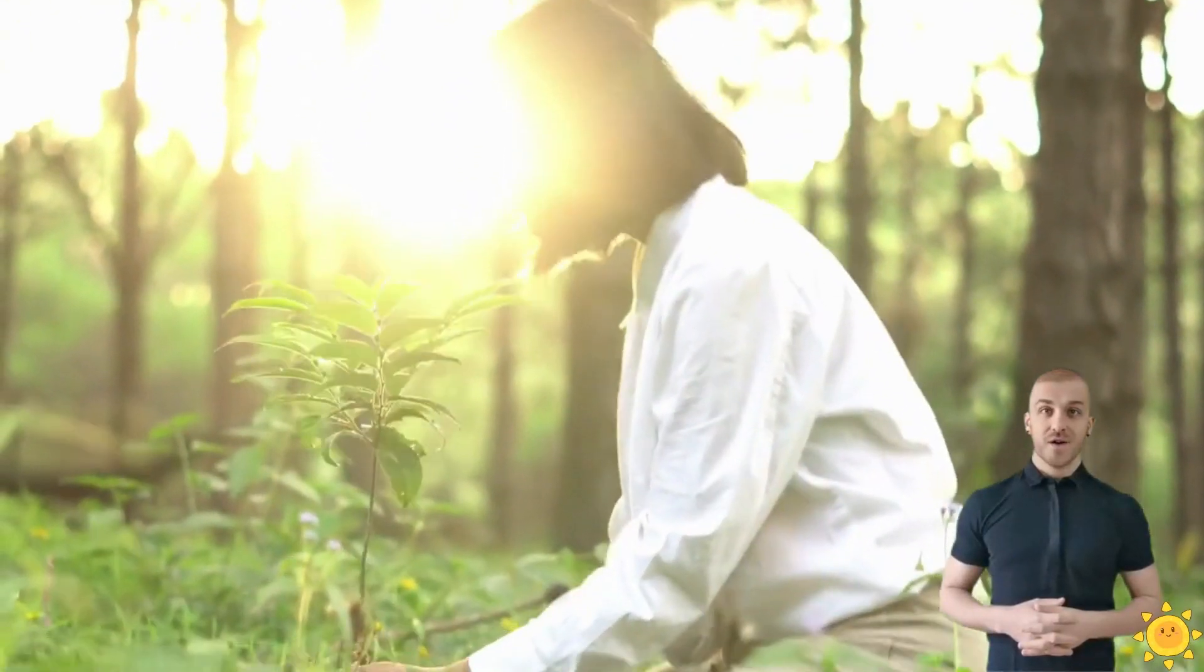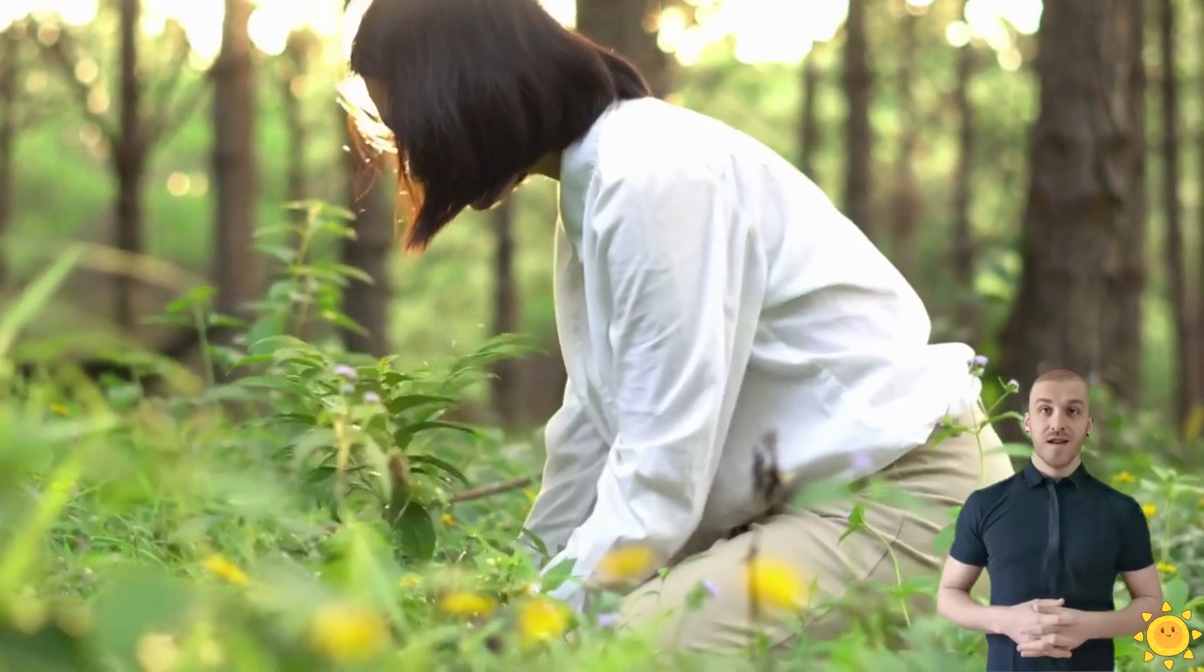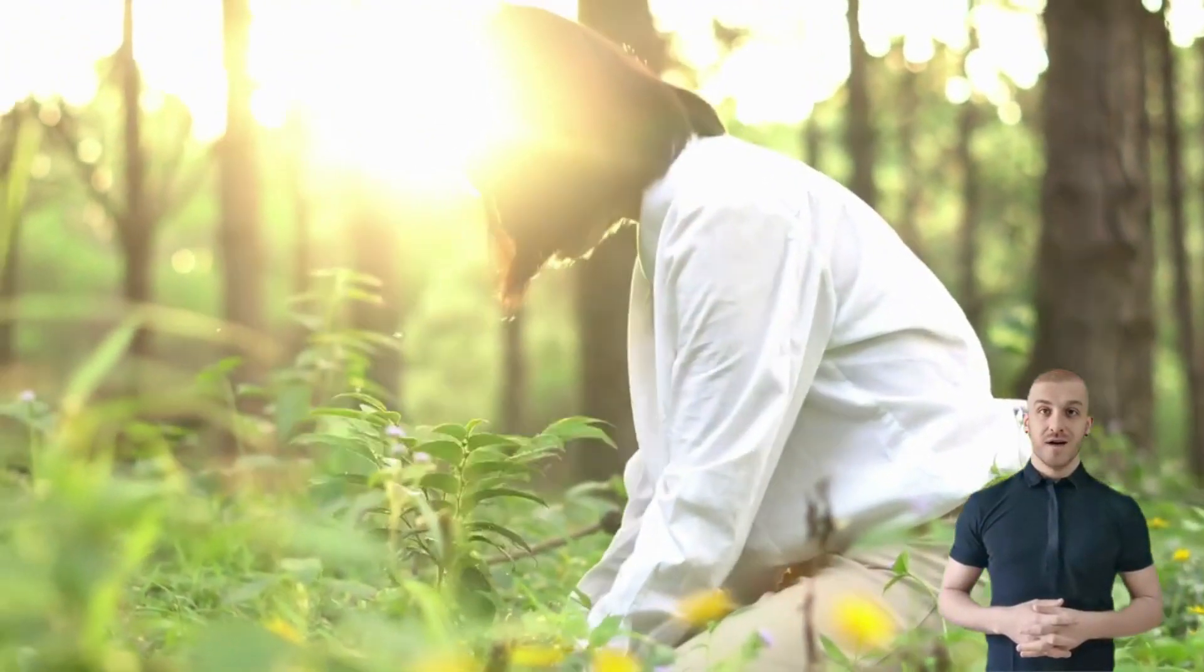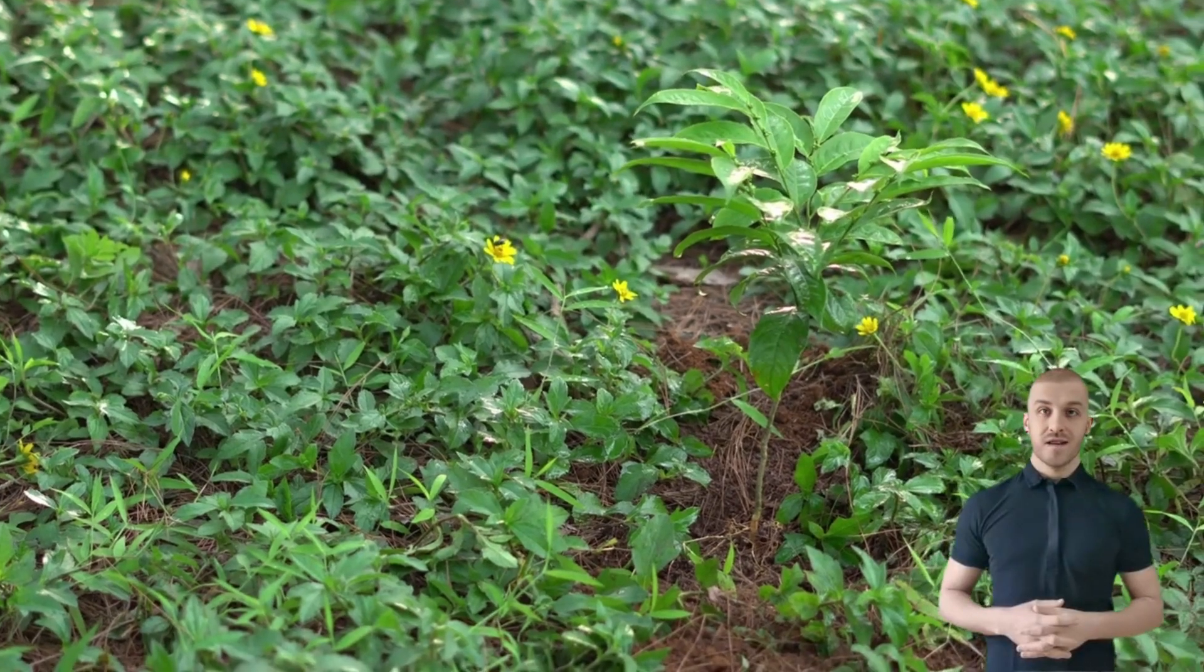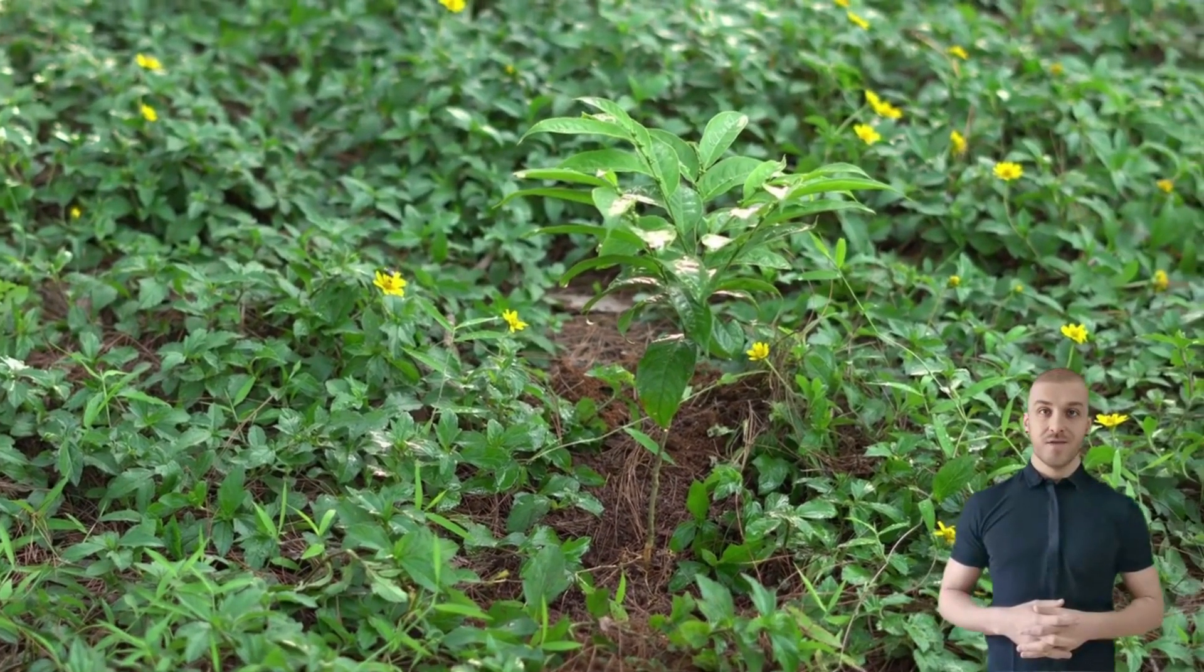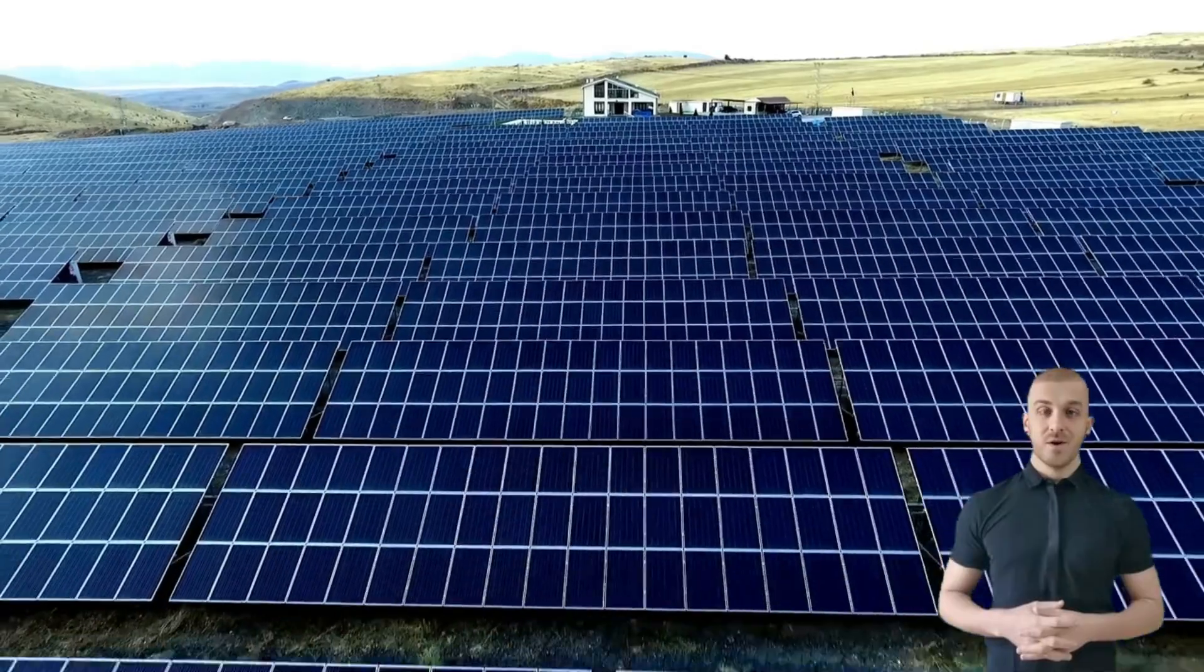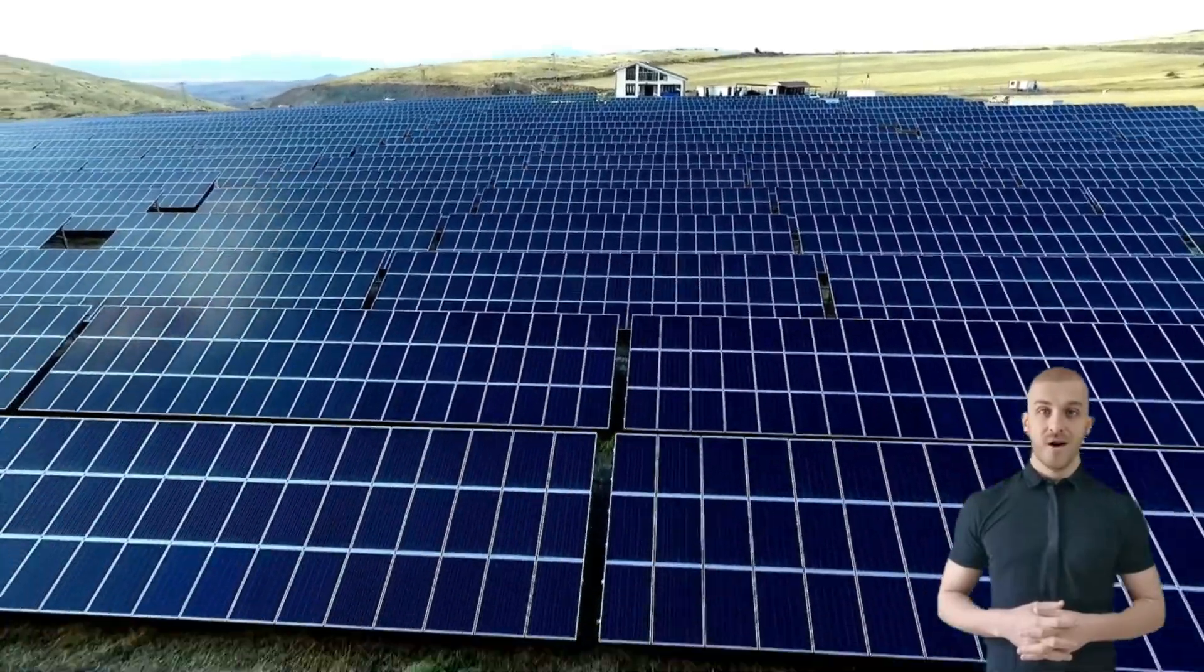There are a few things that we can do to stop global warming. One thing that we can do is to reduce the amount of CO2 and methane that we produce. We can do this by switching from using fossil fuels to using renewable energy sources like solar power and wind power.